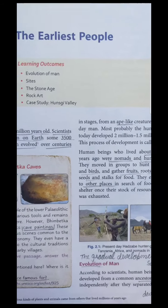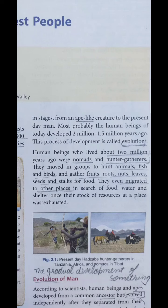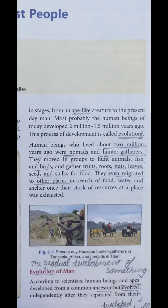So if I talk about how is the life of human beings — how is the life of the human being in ancient India or we can say early human beings. So definitely human beings who lived about 2 million years ago were nomads. They are known as nomads, and their main activities were hunting and gathering. They moved in groups from one place to another just to hunt animals, hunt fishes, hunt birds, and they gathered fruits, roots, nuts, leaves, seeds. Definitely they migrated from one place to another — migrate means they moved from one place to another in search of food, water and shelter.